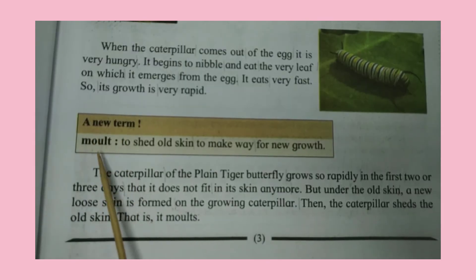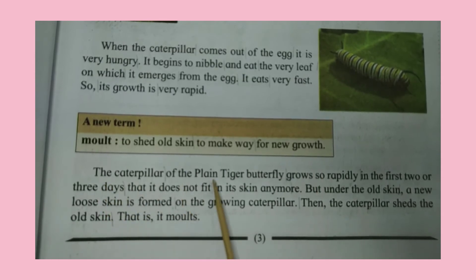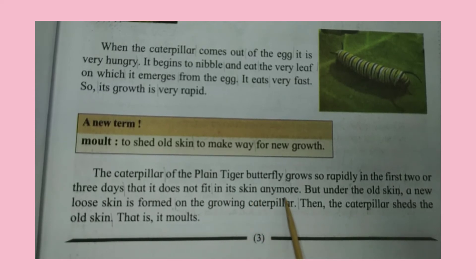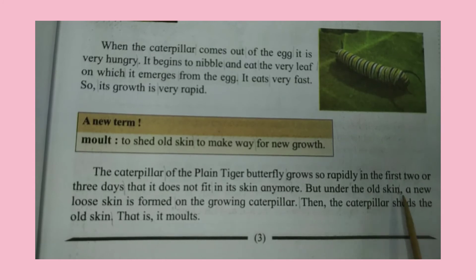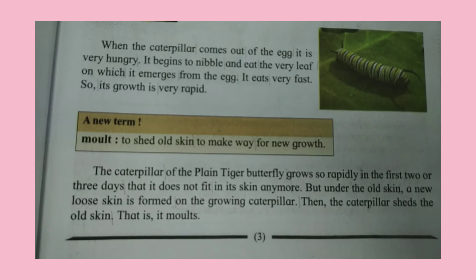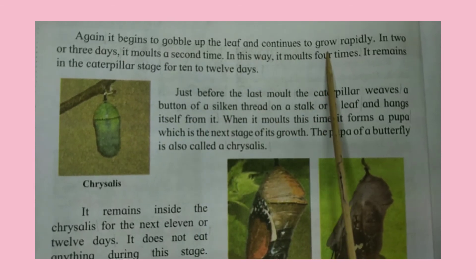A new term — Moult: to shed old skin to make way for new growth. The caterpillar of the Plain Tiger Butterfly grows so rapidly in the first two or three days that it does not fit in its skin anymore. But under the old skin, a new loose skin is formed on the growing caterpillar. Then the caterpillar sheds the old skin, i.e. it moults. Again, it begins to gobble up the leaf and continues to grow rapidly.